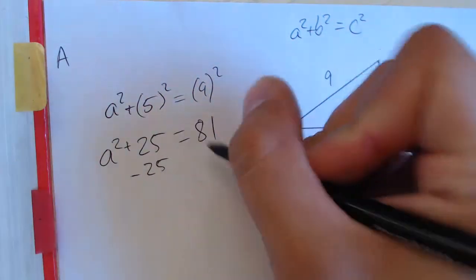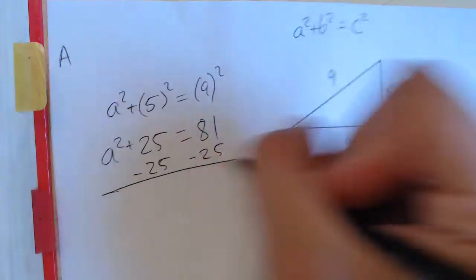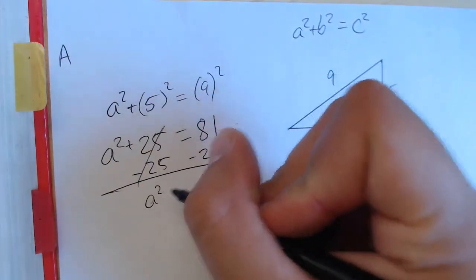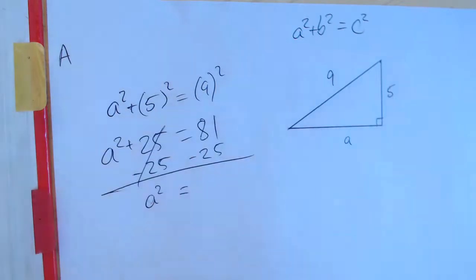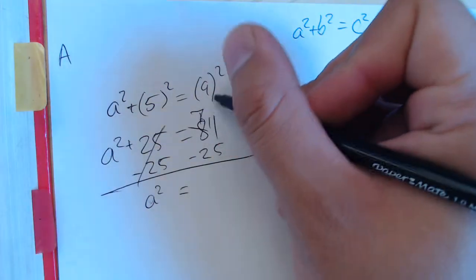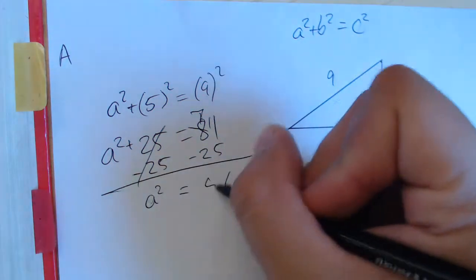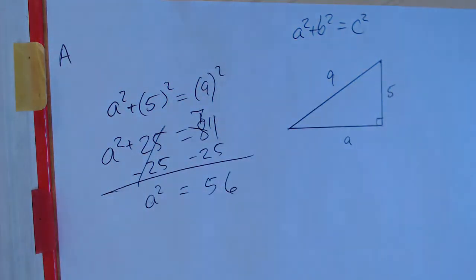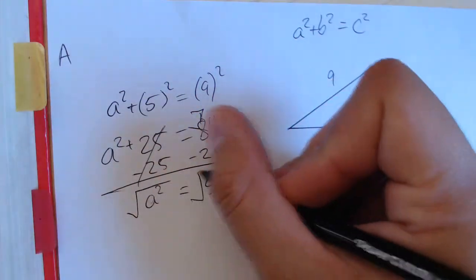We want to subtract 25 from each side. So then we get A squared is equal to 56. So A squared equals 56, find the square root of each side.